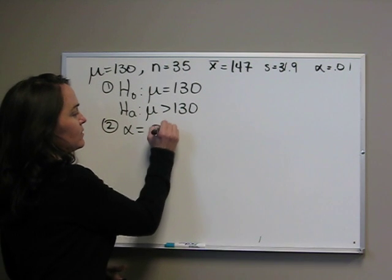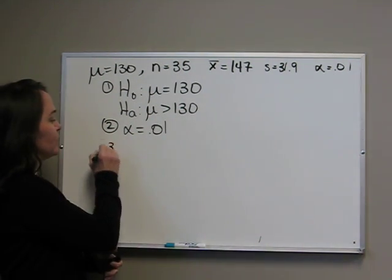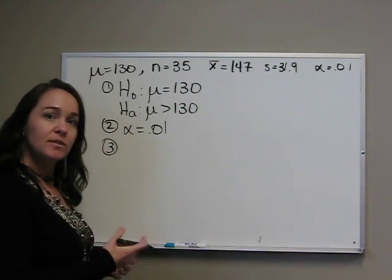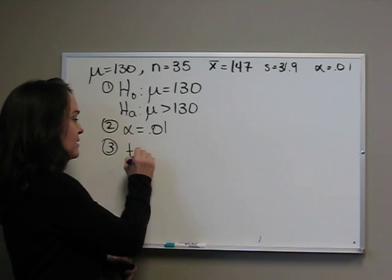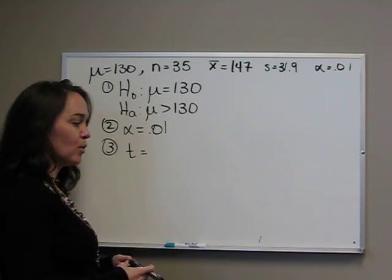Second step is alpha. Remember our significance level. Third step, since we don't know sigma, we're doing the t-test. That means we need the t-score.